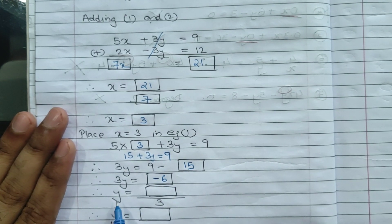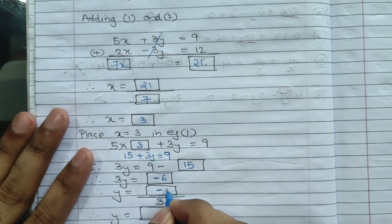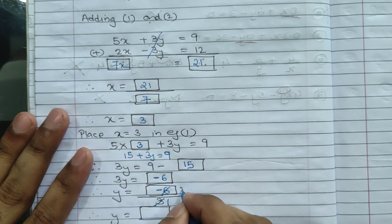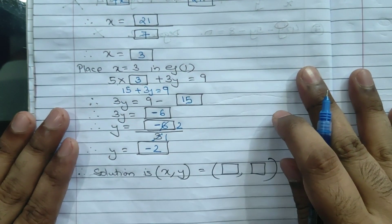9 minus 15 gives me minus 6. So my next equation will be 3y equals minus 6. So y equals minus 6 upon 3. Therefore y equals minus 2.